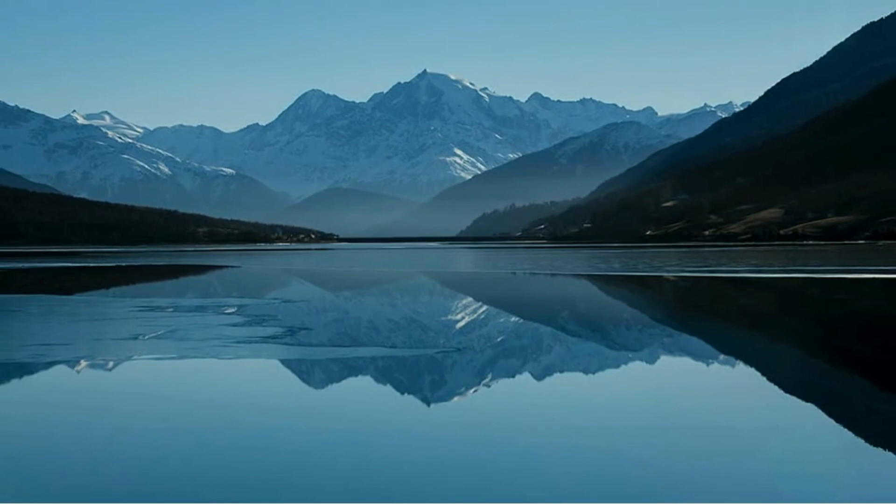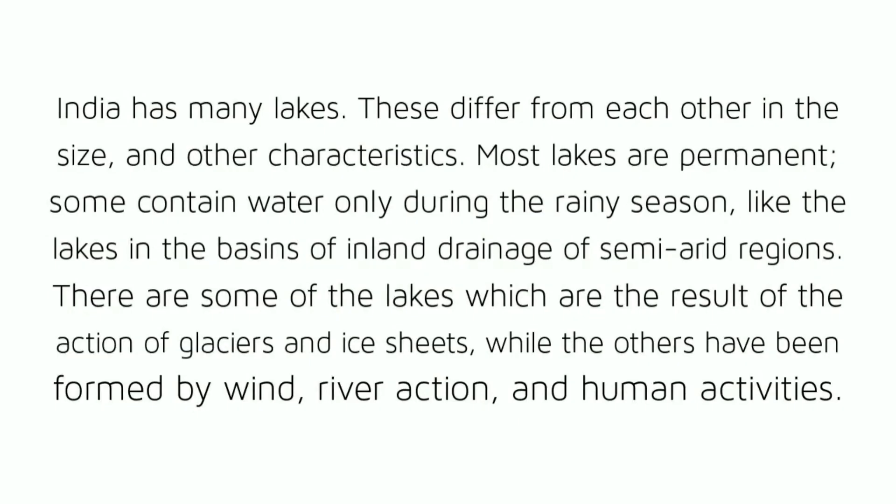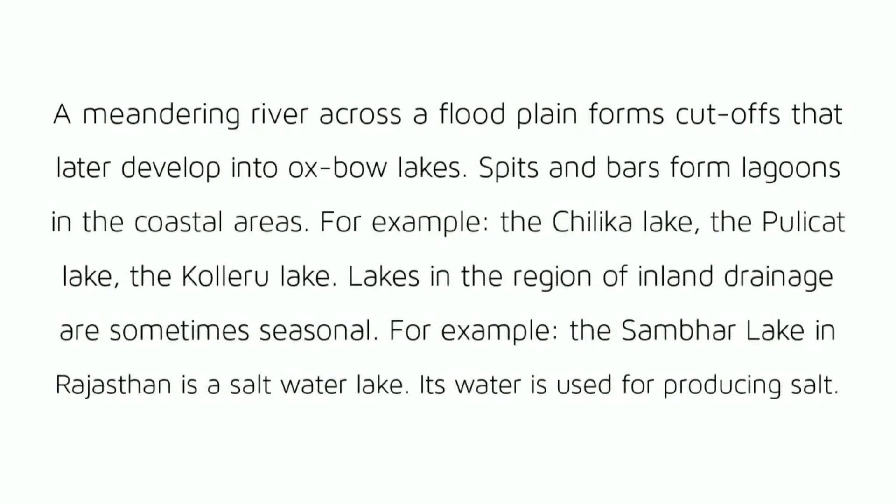India has many lakes which differ from each other in size and other characteristics. Most lakes are permanent; some contain water only during the rainy season, like the lakes in the basins of inland drainage of semi-arid regions. Some lakes are the result of the action of glaciers and ice sheets, while others have been formed by wind, river action and human activities. A meandering river across a flood plain forms cut-offs that later develop into oxbow lakes.